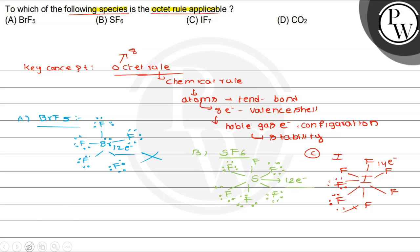Coming to the last option, CO2. The structure is O=C=O. Looking at each oxygen, it has 8 electrons — octet satisfied. The other oxygen also has 8 electrons — octet satisfied. And carbon also has 8 electrons around it. So all three atoms in CO2 have 8 electrons in their valence shell and obey the octet rule.